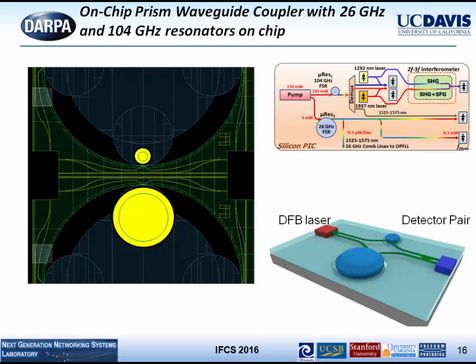This is the experimental result: we have a pump wave and a group of combs at 1292 nm and a group of combs at 1937 nm. These will go through tripling devices to achieve 2F-3F stabilization. In terms of the chips, we'll have a 104 GHz resonator and a 26 GHz resonator from a single laser, coupled and resonating, with a pipeline device for detection and locking.